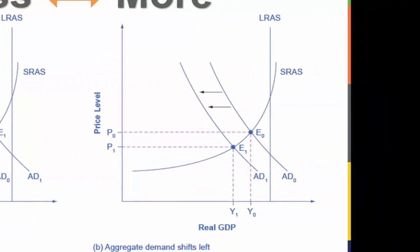A decrease in consumer confidence or business confidence can shift aggregate demand to the left from AD0 to AD1. When aggregate demand shifts to the left, the new equilibrium E1 will have a lower quantity of output and also a lower price level compared to the original equilibrium E0. In this example, the new equilibrium E1 is also further below potential GDP. A decrease in government spending or higher taxes that leads to a fall in consumer spending can also shift aggregate demand to the left.